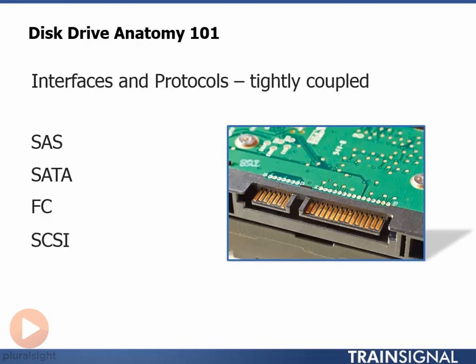SAS and Fibre Channel drives tend to have the best build quality and use the highest quality components, which allows them to spin at higher speeds than SATA-based drives. It's this higher rotation speed that's a major factor in the higher performance of SAS and Fibre Channel drives compared to SATA. SATA drives — Serial Advanced Technology Attachment — are effectively the cheap and deep option: lower cost, lower performance, and potentially lower reliability, but they do come with massive capacities. The dollar-per-gigabyte cost of SATA drives is really good compared to SAS and Fibre Channel, however the dollar-per-performance isn't so great.